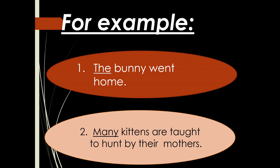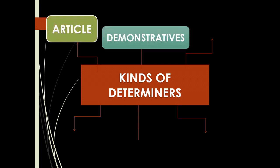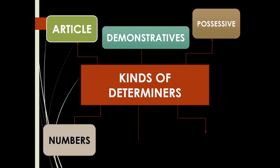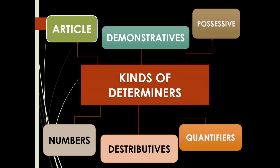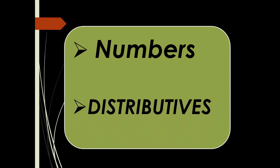There are six kinds of determiners: number one, articles; number two, demonstrators; number three, possessive; number four, numbers; number five, distributors; number six, quantifiers. I have already explained four kinds in lectures one and two. In this lecture you will learn the meaning and uses of the next two kinds: numbers and distributors.